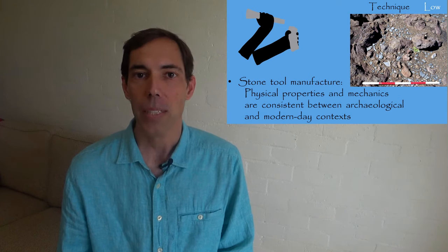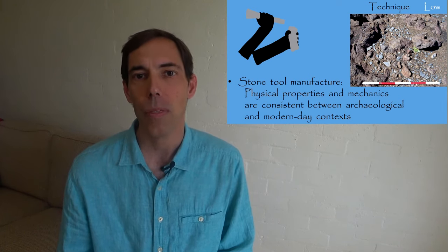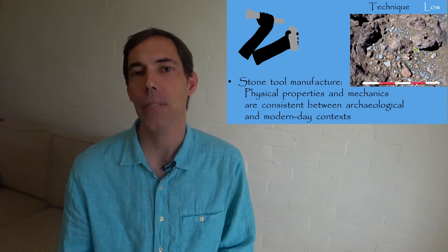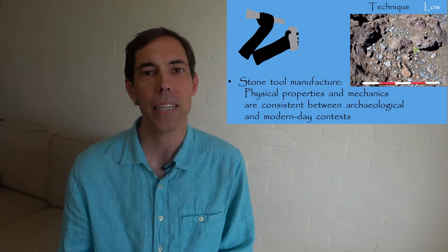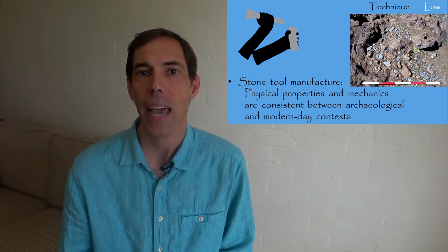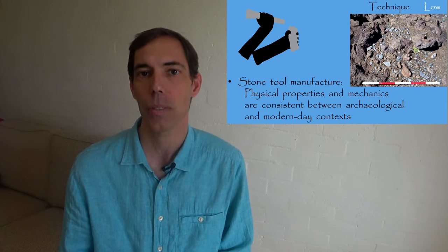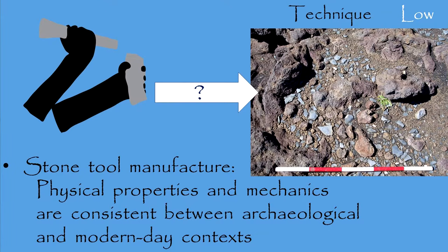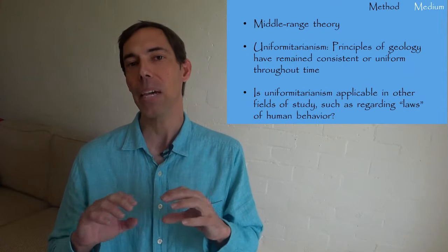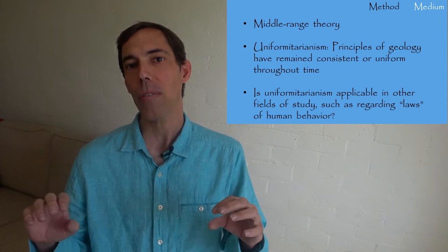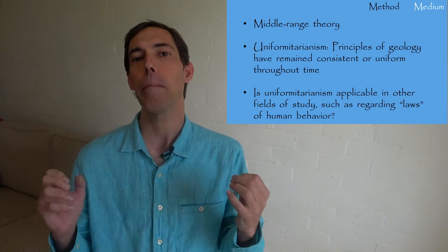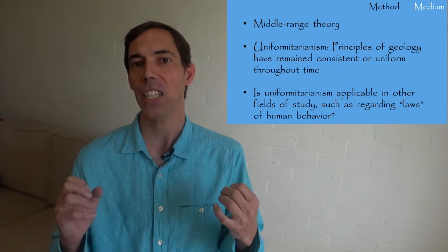In another example, we can use the low order theories about the physical properties of stone materials and about the mechanics of making stone tools. This knowledge allows us to infer how a set of stone flakes originally had been produced.